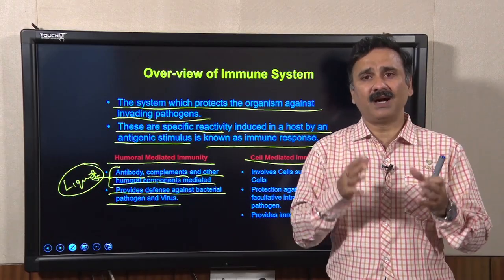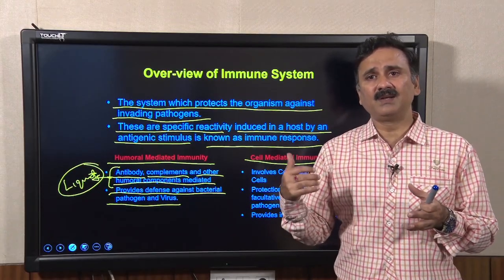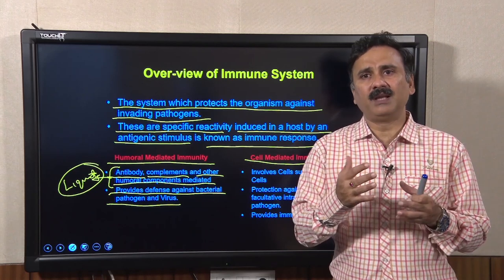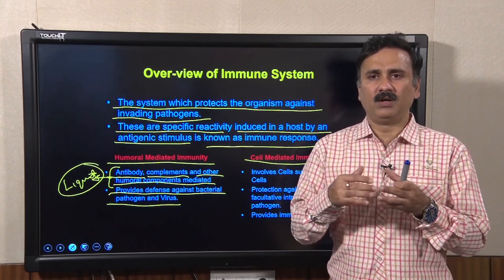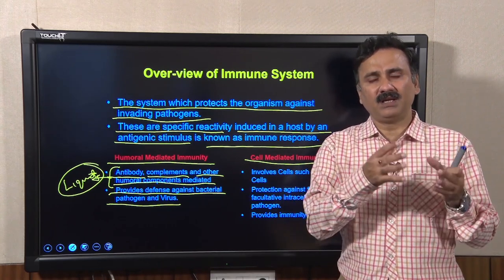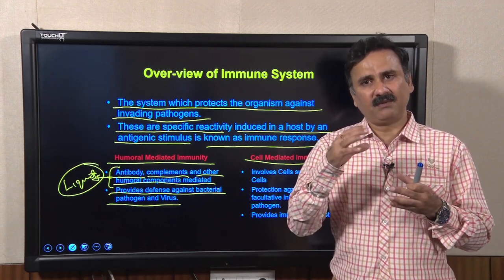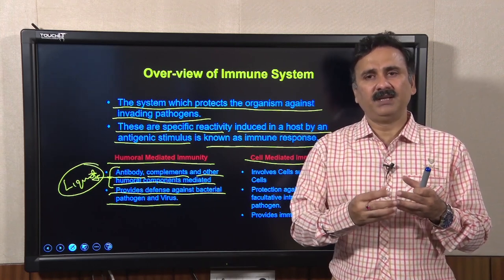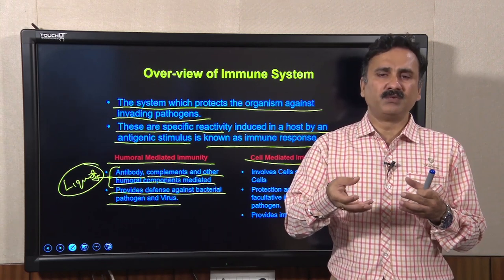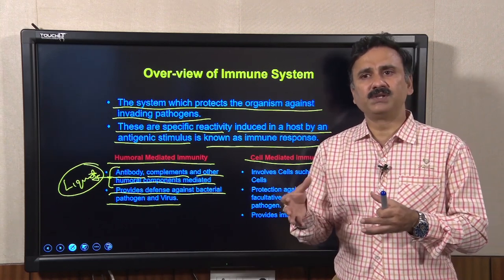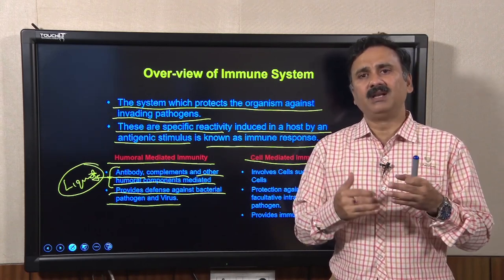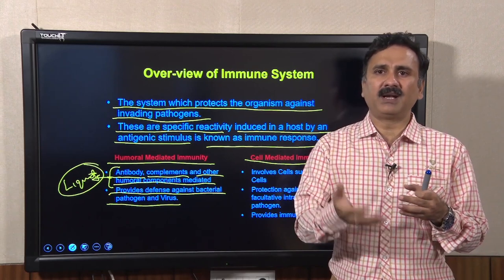The humoral response provides defense against bacterial and viral pathogens. It is the early response developed against deadly pathogens. For example, when we get cold or influenza infections, the first response is the humoral response — the virus is recognized by antibodies and other components of the humoral response which try to elicit the immune response. Similarly, for bacterial infections, complement and related systems are activated to destroy the bacterial cells.